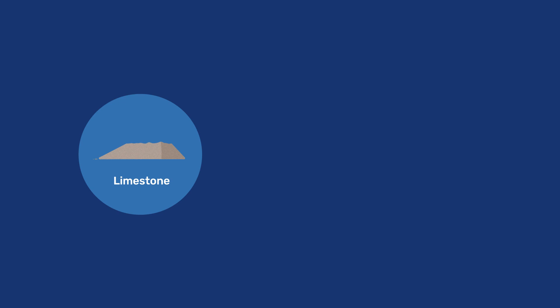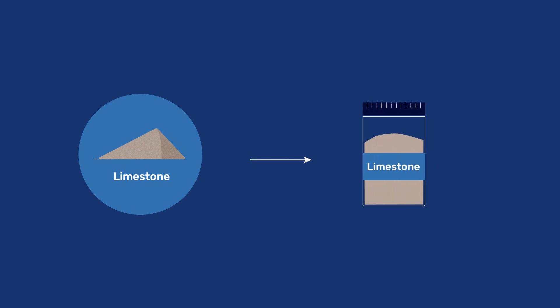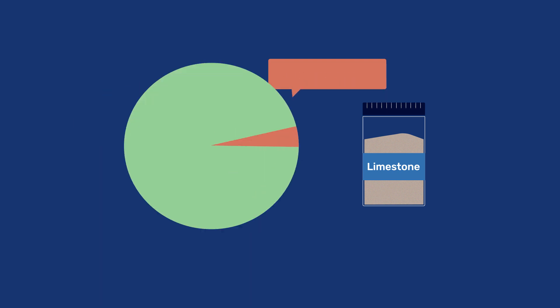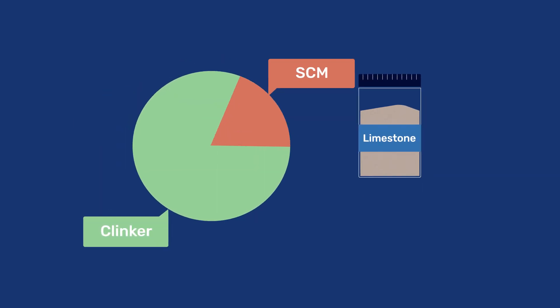In this video, we examine the advantages and limitations of limestone as a supplementary cementitious material, or SCM, to serve as a partial replacement for clinker in cement production to reduce its environmental impact.